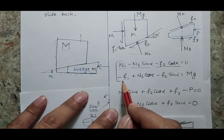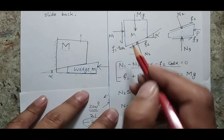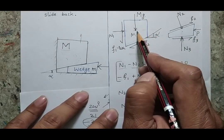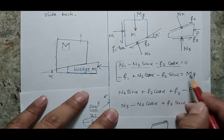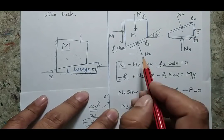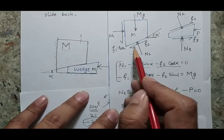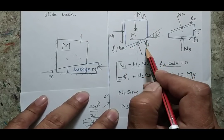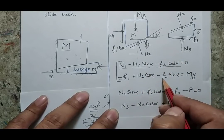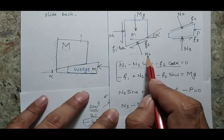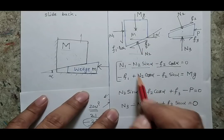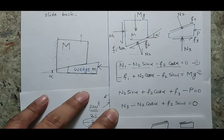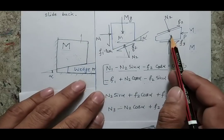When I write the vertical force balance, F1 acts in the downward direction with a negative sign, and Mg also acts downward. The F2 force acting along the slant surface has two components: one horizontal and one in the downward direction, so that gives a negative sign with F2 sin(alpha), and the vertical component of N2 will be N2 cos(alpha). This is Equation 1 for the larger body. Similarly, I can write two equations for the wedge body.